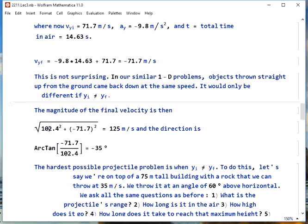To find the magnitude of the final velocity, we then take the square root of the sum of the squares of the components. We get 125 meters per second. The direction this time is negative 35 degrees, so the path down is a mirror.